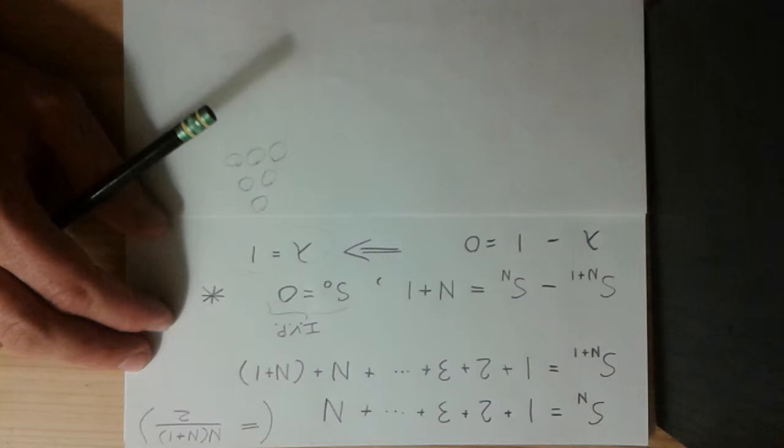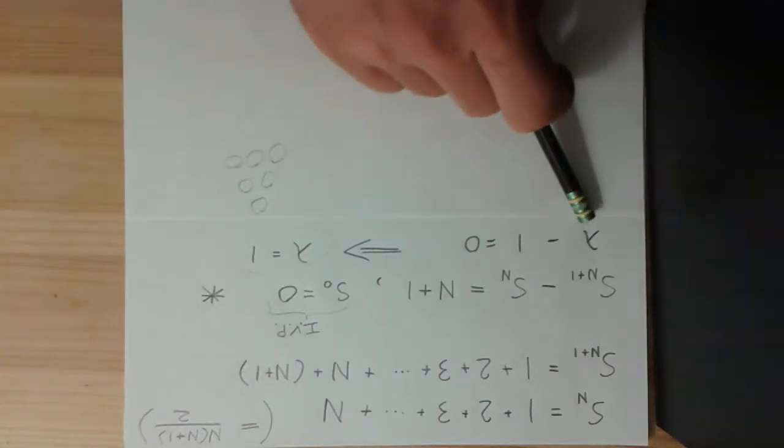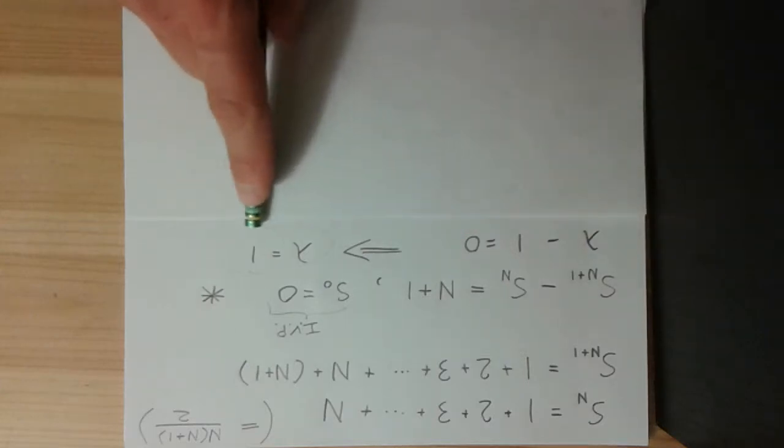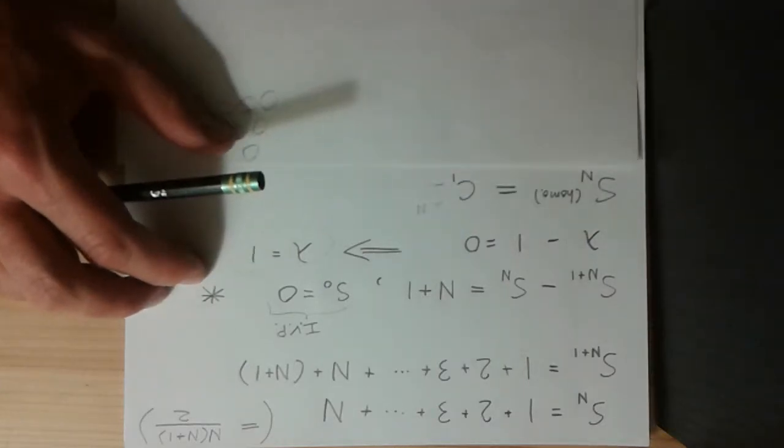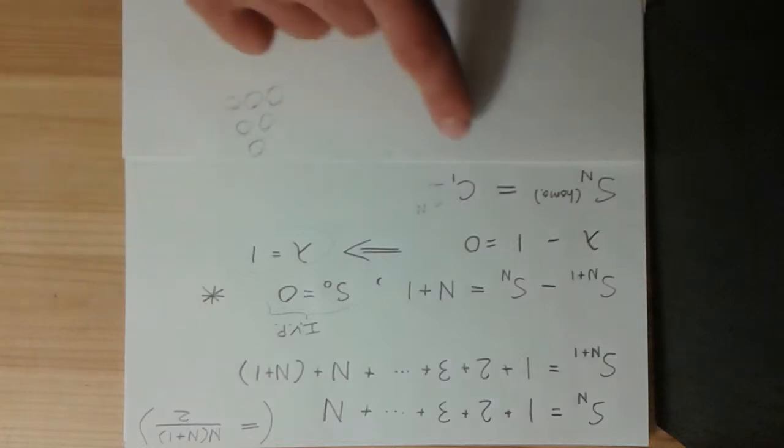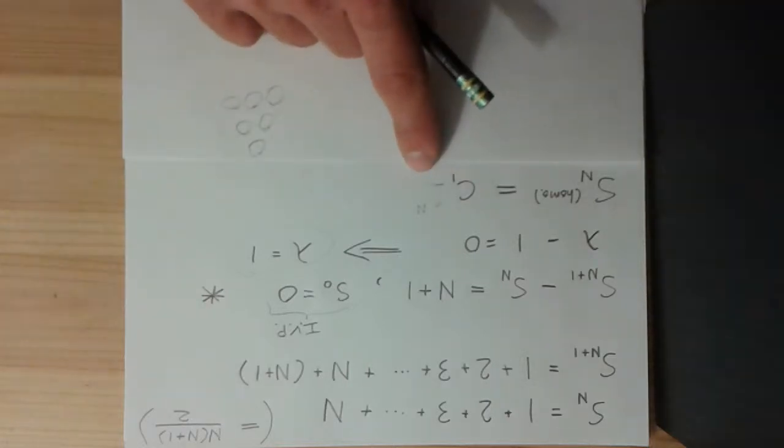Okay. So, the first thing we want to do is look at the homogeneous solution. So, let's look at the characteristic equation. Find that lambda is equal to 1. And so, the homogeneous solution is just a constant times 1 to the n, which is just a constant.